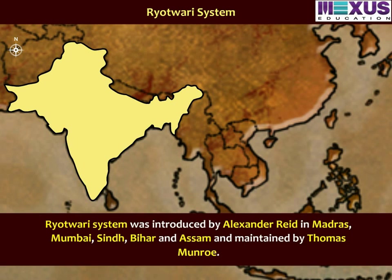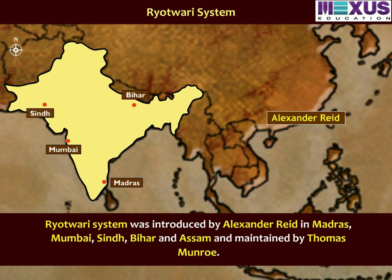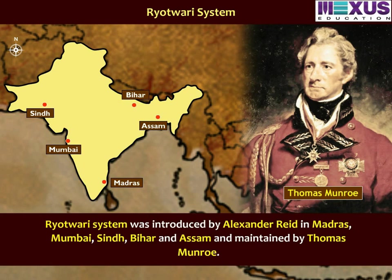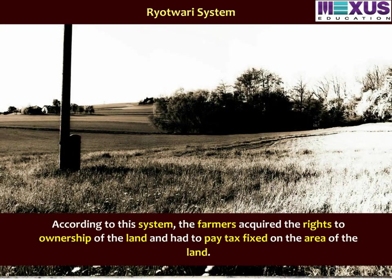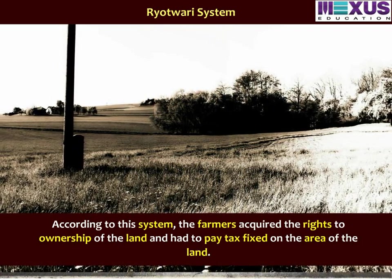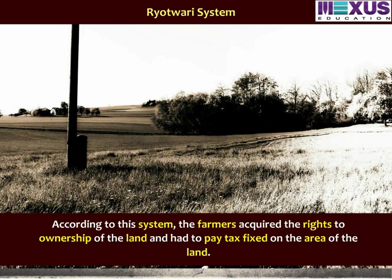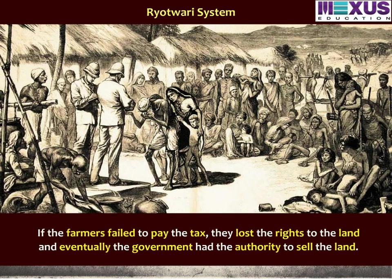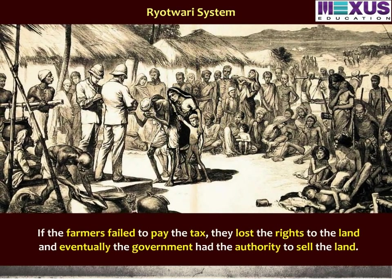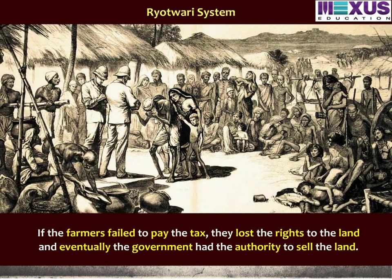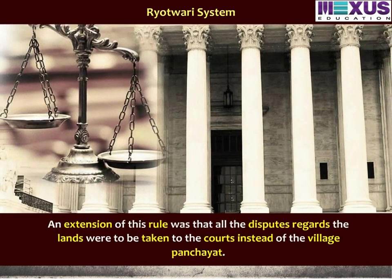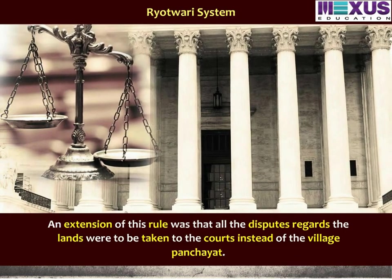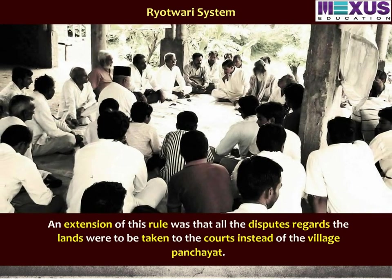The ryotwari system was introduced by Alexander Reed in Madras, Mumbai, Sindh, Bihar, and Assam, and was later maintained by Thomas Munro. According to this system, the farmers or ryots acquired the rights to ownership of the land and had to pay a tax fixed on the area of the land. If the farmers failed to pay the tax, they lost the rights to the land and the government had the authority to sell it. An extension of this rule was that all land disputes were to be taken to the courts instead of the village panchayat.